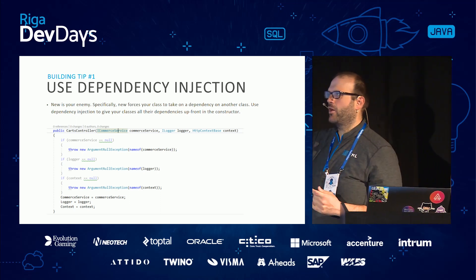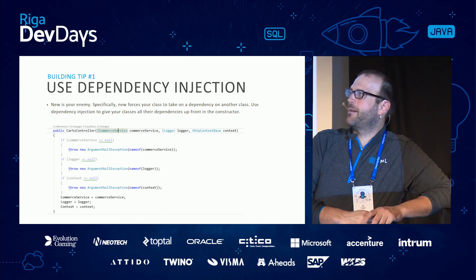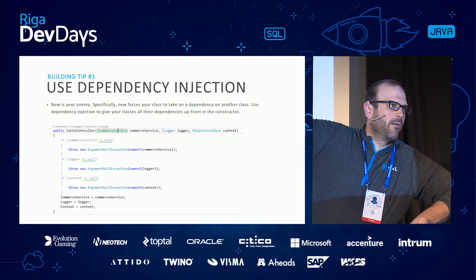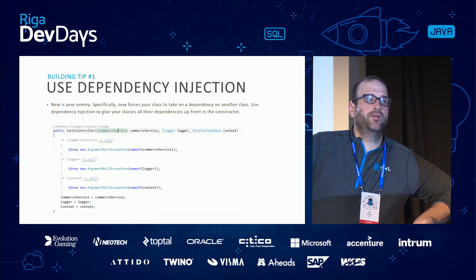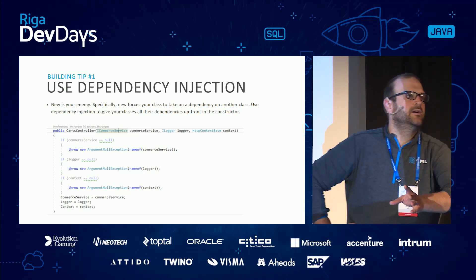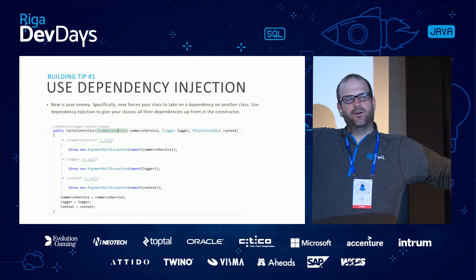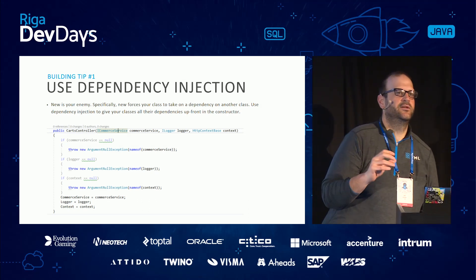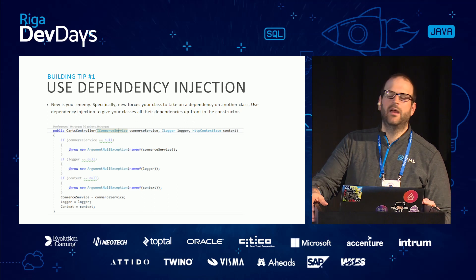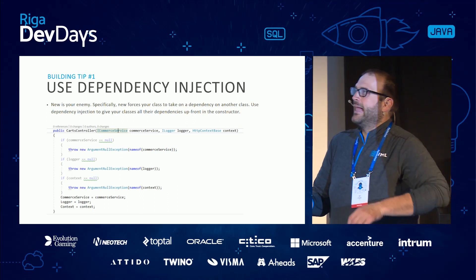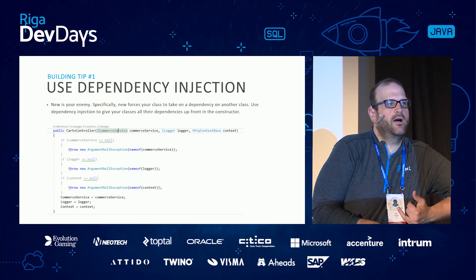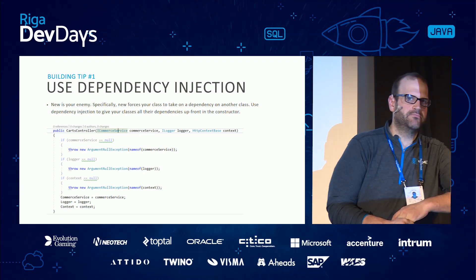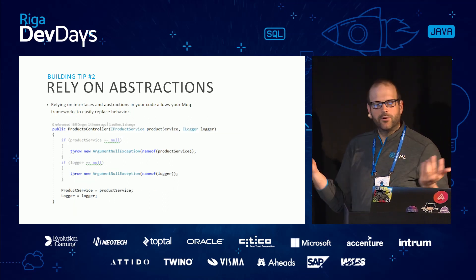Here's a good example: my carts controller from the demo. You can see I'm injecting abstractions — interfaces — into my constructor. I don't know what the commerce service actually is; I don't even know if it's a real class or a mock. It doesn't matter — all this class cares about is the interface, not the implementation. At a very high level, that's all dependency injection is: supplying a class with its dependencies. If I had done 'new Logger' instead, the class would need to know the logger's exact implementation and I wouldn't be able to mock it.